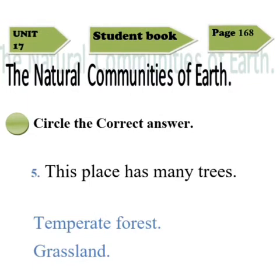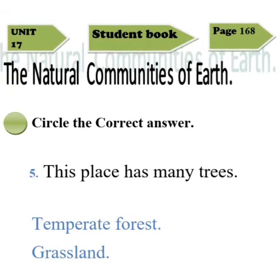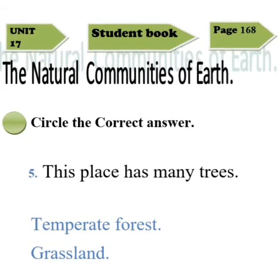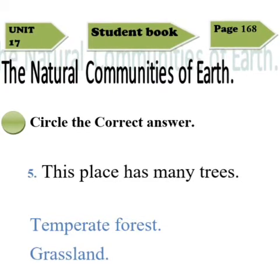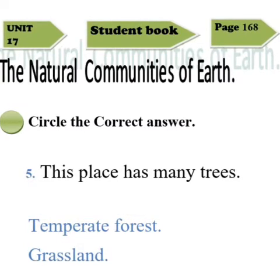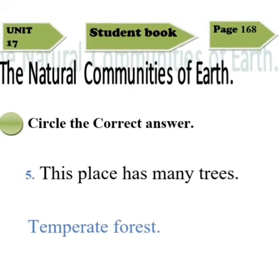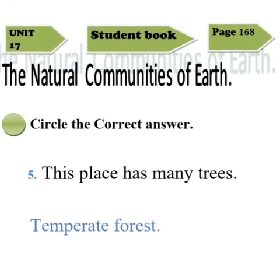Sentence five: this place has many trees. If you remember that in the grassland biome there was not a single tree, so the correct option is temperate forest. Circle temperate forest in sentence five.